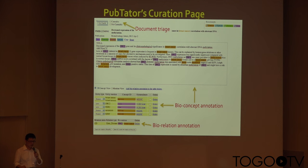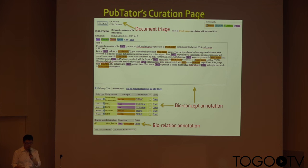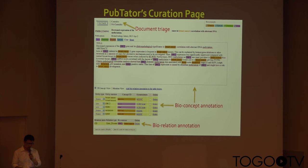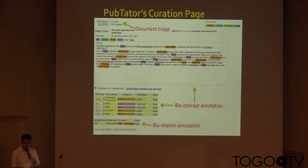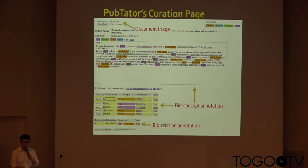This is the PubTator curation function, which provides users the ability to curate articles, like the documentary annotation — to curate the document for curation or not. We also allow users to use the table to curate the bioconcepts, and also allow them to annotate the biorelations. All the relations and concepts users can define by themselves.